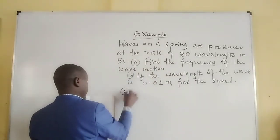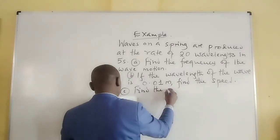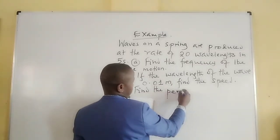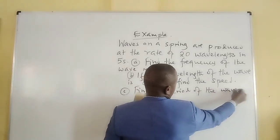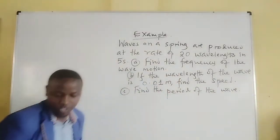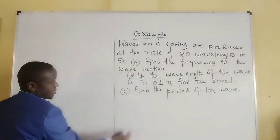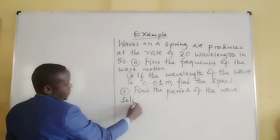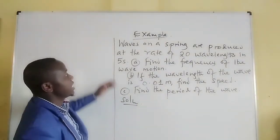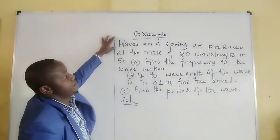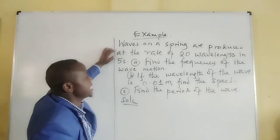Part C: Find the period. So these are the questions we are going to do. We'll call it a lesson. Find the frequency of the wave motion given that waves are produced at the rate of 20 wavelengths in five seconds.